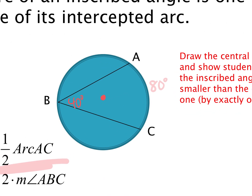To show you the difference, draw the center on your circle and draw the central angle that creates the same arc. The central angle from A to the center to C is 80 degrees. Do you see the difference in size between the two angles? By moving the vertex further away to the edge of the circle, it creates a smaller angle — the inscribed angle of 40 degrees is significantly smaller than the central angle of 80. That's why we divide by two.